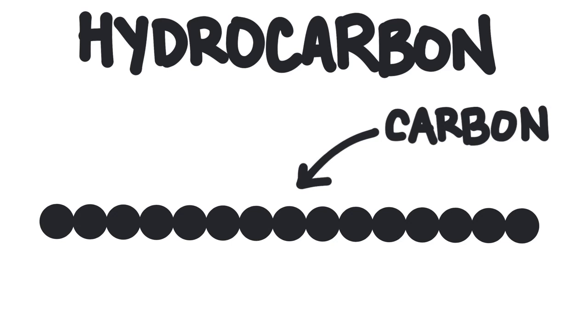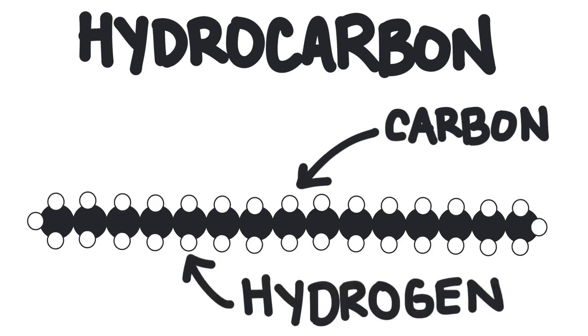Generally, carbon atoms are linked together in long chains with hydrogen atoms bonded around the outside. Paraffin contains chains that are between 20 and 40 carbon atoms long.